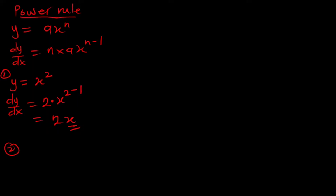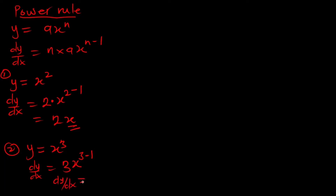Example two: find the derivative of y equal to x cubed. Therefore our dy/dx is going to be the power 3 multiplying x, then reducing the power by one. So dy/dx is going to be 3x squared.